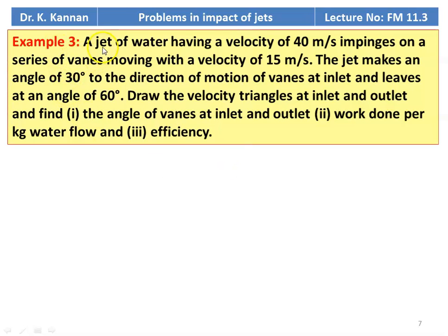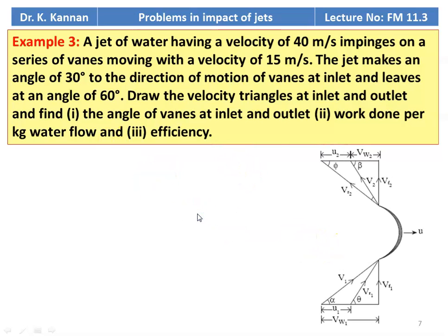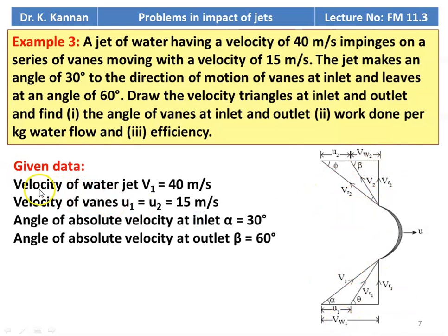Example number 3. A jet of water having a velocity of 40 m/s impinges on a series of moving vanes with a velocity of 15 m/s. The jet makes an angle of 30 degrees to the direction of motion of the vane at the inlet and leaves at an angle of 60 degrees. Draw the velocity triangle at the inlet and outlet, and find the vane angles at inlet and outlet, work done per kg of water, and efficiency of the machine. This is again the velocity triangle at inlet.